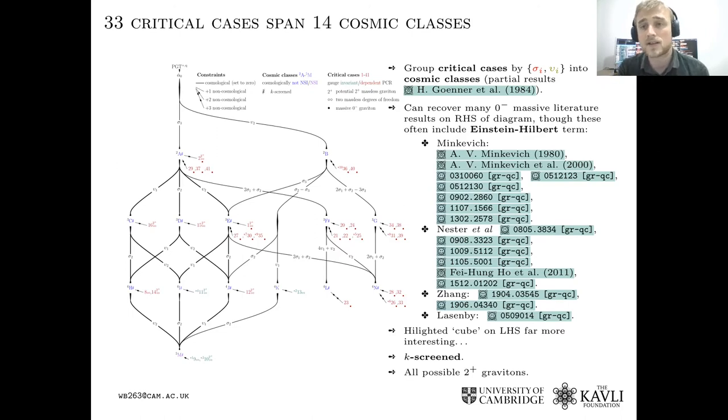So we now group the 33 theories according to the cosmological phenomenology, and that's given in this map here. So on the right hand side of this map you can actually recover a lot of the results in the literature which pertain to theories which contain only massive particles. There's a very substantial literature on Poincaré gauge theory cosmology, and on the left hand side you can see this nice cube shape of constraints. These theories are apparently novel, they do not appear in the literature, and strangely they're all k-screened.